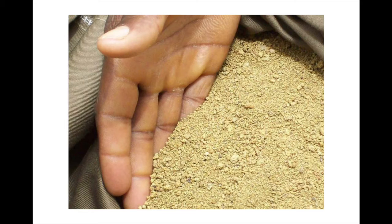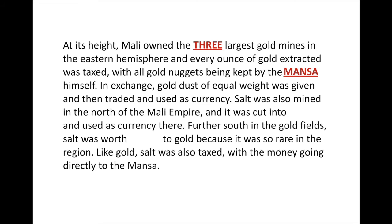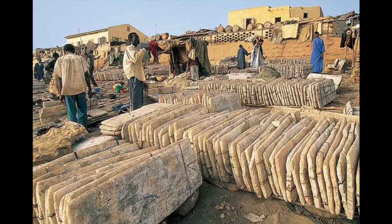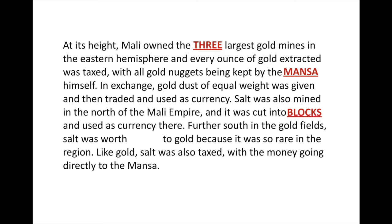Salt was also mined in the north and cut into bricks used as currency. Further south in the gold fields, salt was actually worth equal to gold because it was so rare in the region — people there had plenty of gold but needed salt. So the inverse of what we'd think: salt was as valuable as gold. Salt was taxed as well, paid in chunks of salt or gold dust, with the money going directly to the Mansa, making him extraordinarily wealthy.